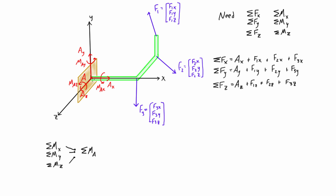There will be three moments caused by the reaction at the rigid fixed connection, and three other moments caused about point A by the applied forces. When we have an applied force on an object, the moment about point A equals the position vector from point A to where the line of action of the force passes through the object, crossed with the force itself. In these 3D statics problems, these position vectors are easy to find because you know the lengths of each section.